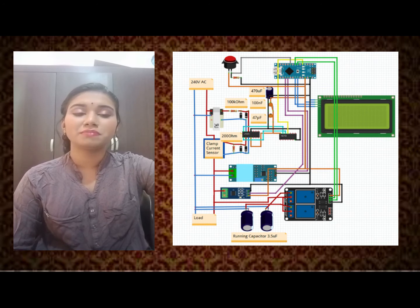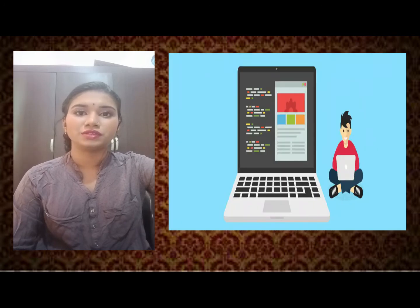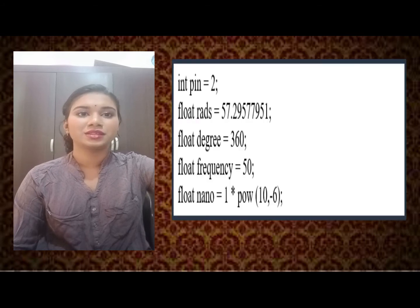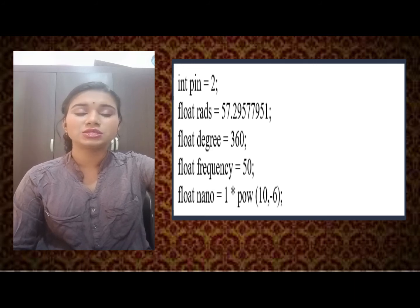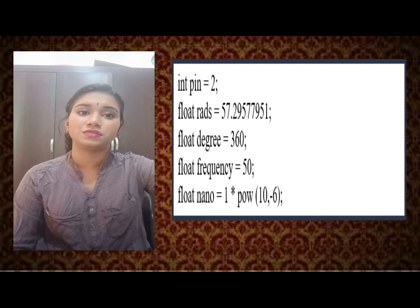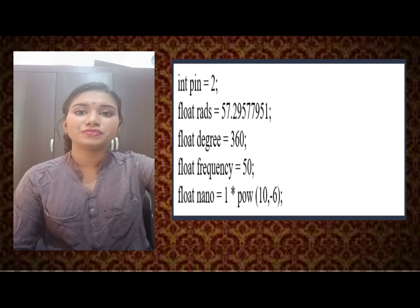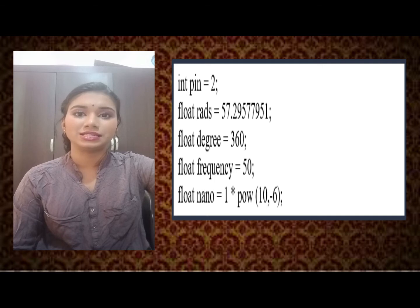In this project, the power factor focus is on achieving a value above 0.85, as set by TNB. The coding defines a radian value of 57.29577951, meaning one radian is approximately 57 degrees, used to calculate phase difference between voltage and current. The frequency is set to 50 Hz, Malaysia's standard frequency, with 360 degrees per cycle. The float nano constant of 1×10⁻⁶ converts nanoseconds to seconds, and the float data type is used to obtain decimal points in calculations.